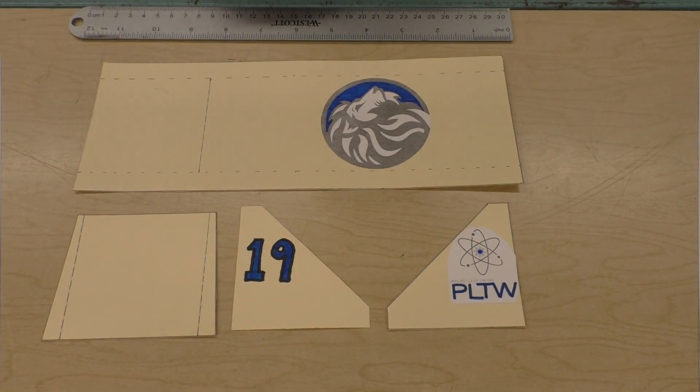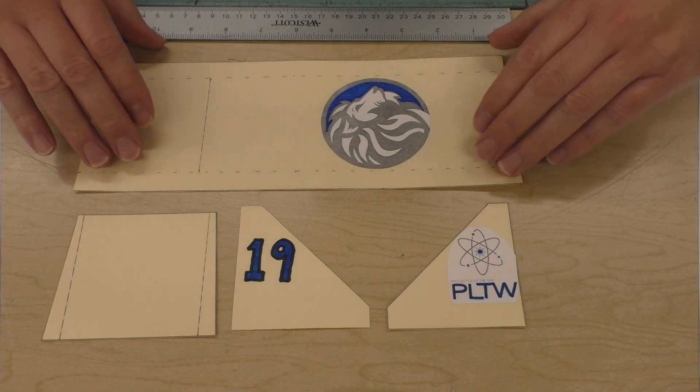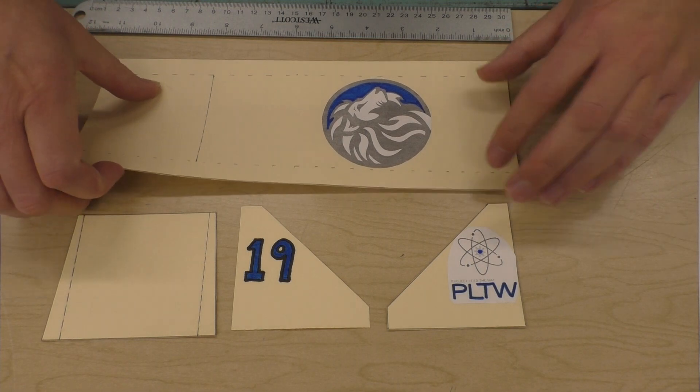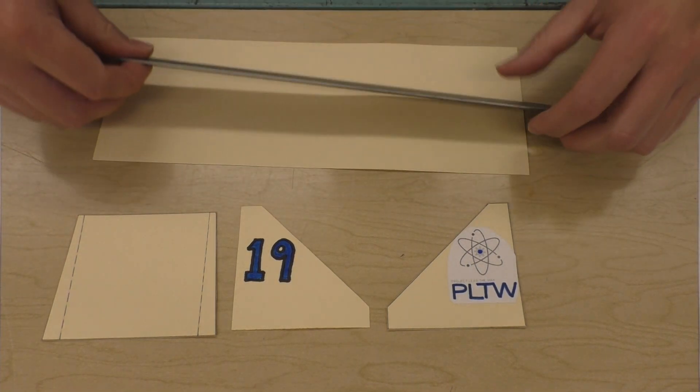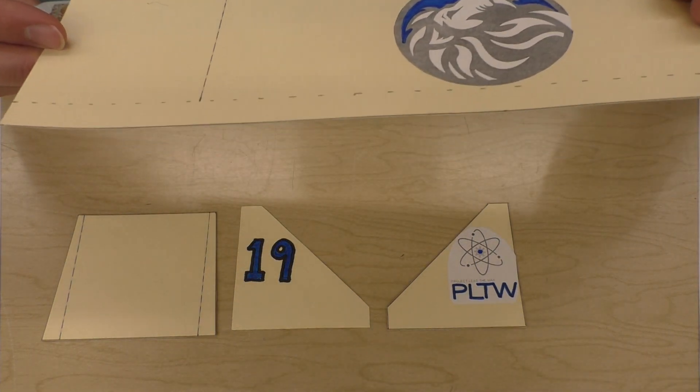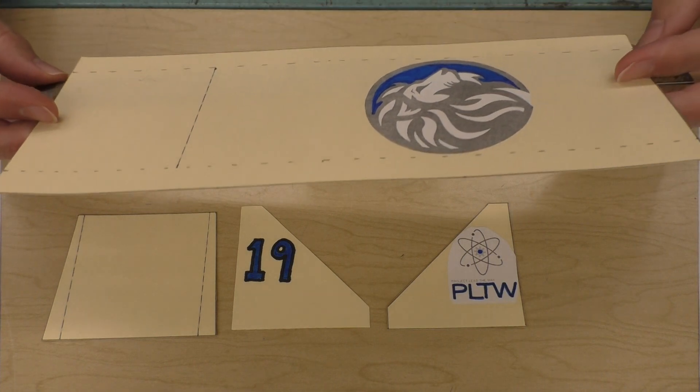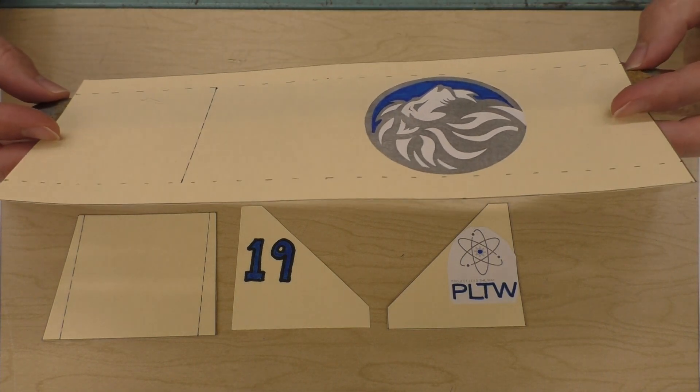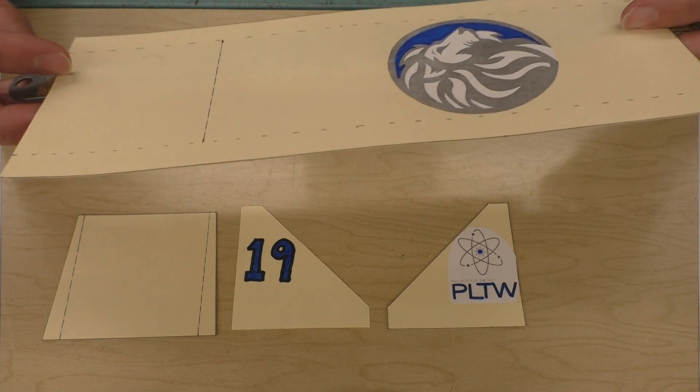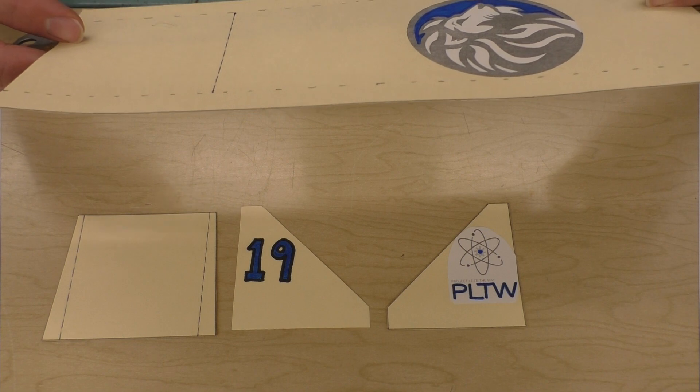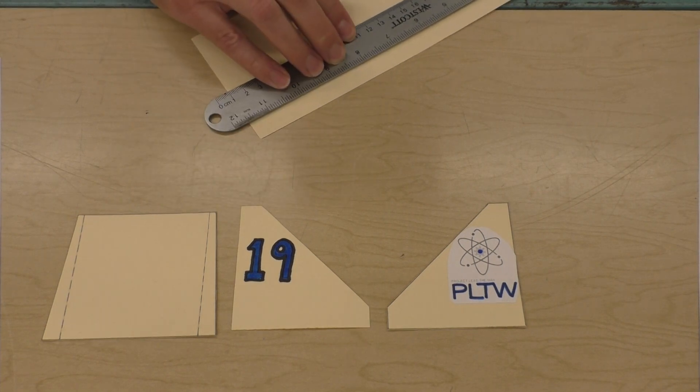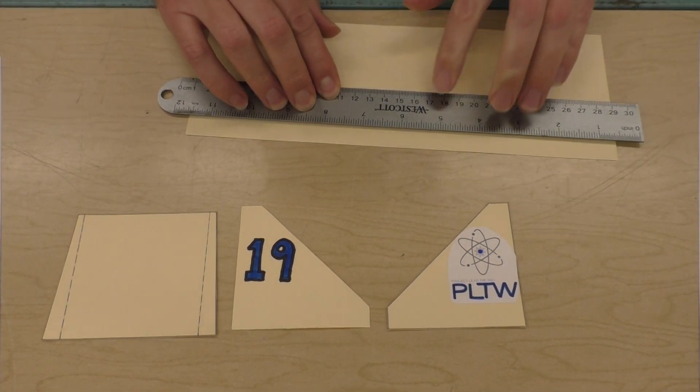I'll show you real quick how I would go ahead and assemble this. First, if this is the top of the air skimmer, I'm going to flip this over. I'm going to take my ruler and I'm going to quickly line it up with the dotted line so you guys can see here, dotted line, dotted line. Here, it's pretty good.